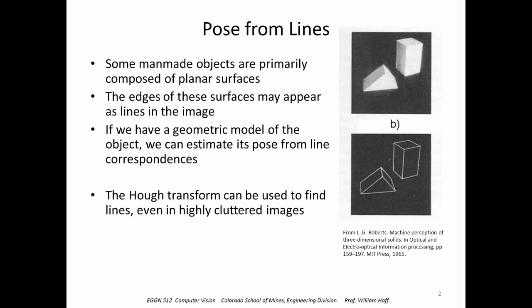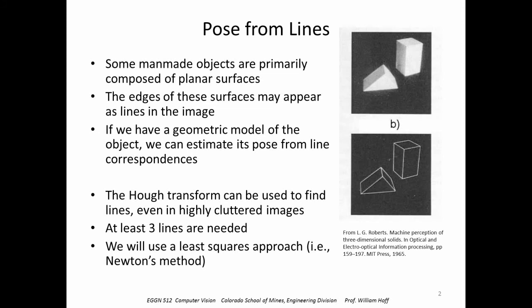The Hough Transform can be used to find lines even in highly cluttered images. At least three lines are needed to determine the pose. In this presentation, we'll use a least squares method, namely Newton's method, to find the pose from the line correspondences.